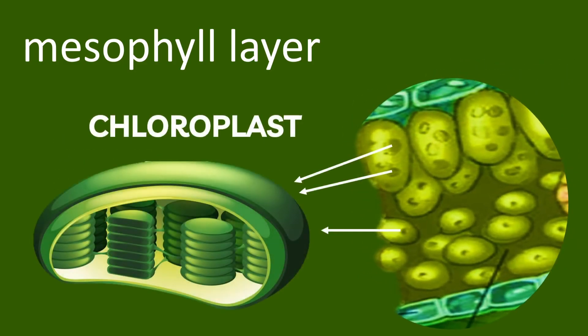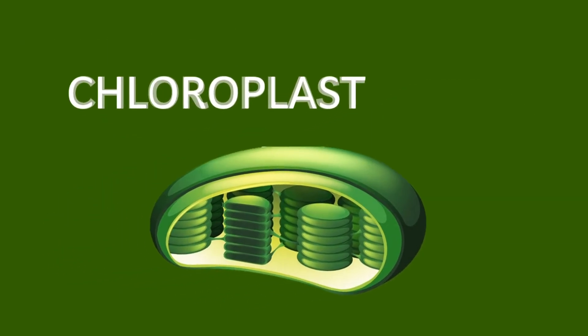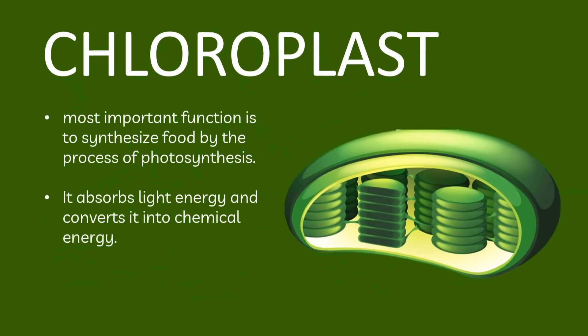Last but not the least are the chloroplasts. Chloroplasts are located in the cytoplasm of plant cells, specifically in the mesophyll cells present between the upper and lower epidermis. Chloroplasts' most important function is to synthesize food by the process of photosynthesis — they absorb light energy and convert it into chemical energy.